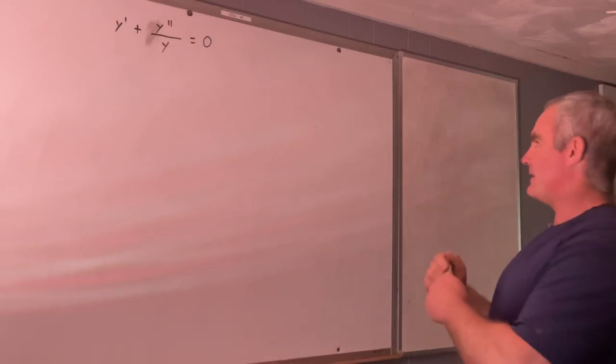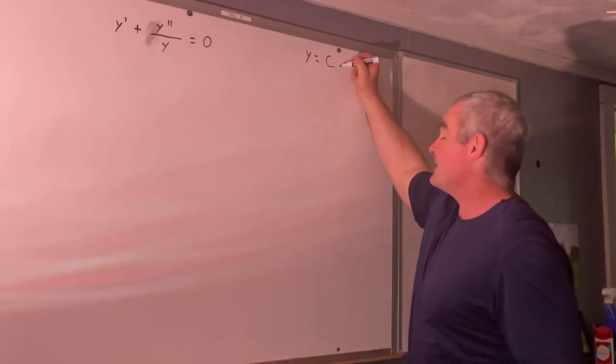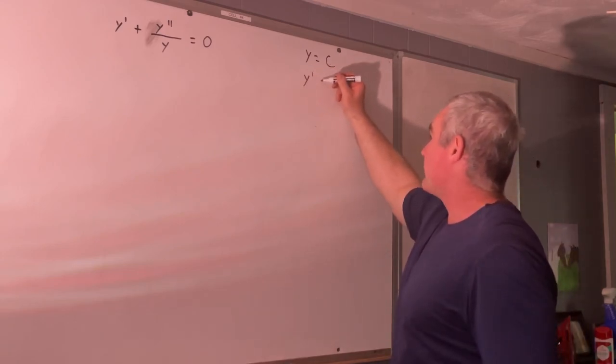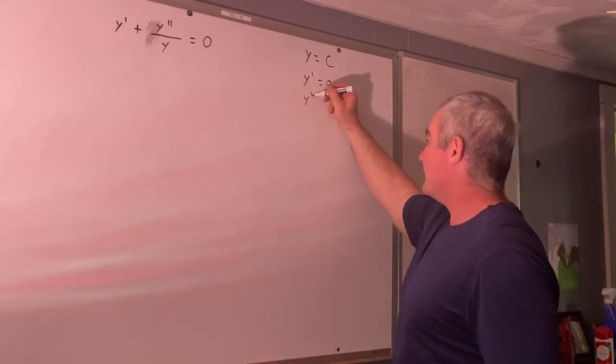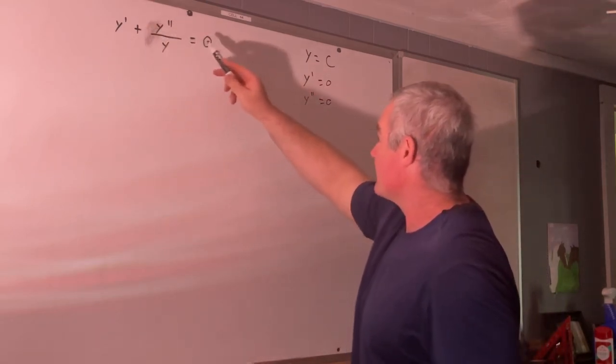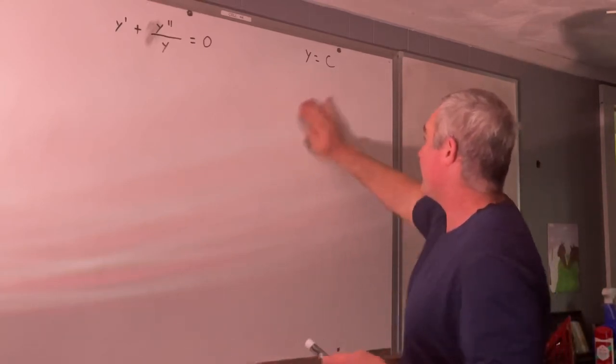First, the obvious solution is that y is equal to c. If y is equal to c, y prime equals 0, y double prime equals 0, we get 0 plus 0 is equal to 0. So that's the obvious solution.